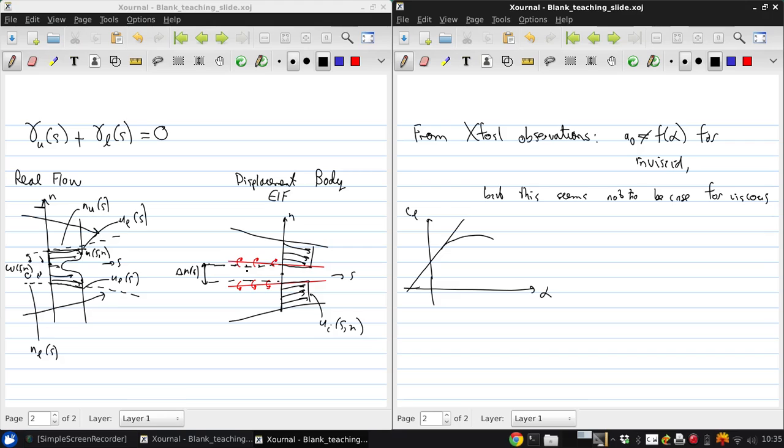Now, a very intuitive explanation from this comes from combining what we know of thin airfoil theory with the details of the displacement body model. In thin airfoil theory, we usually gave the result for a general cambered airfoil as 2π(α - α_L=0) = C_l.